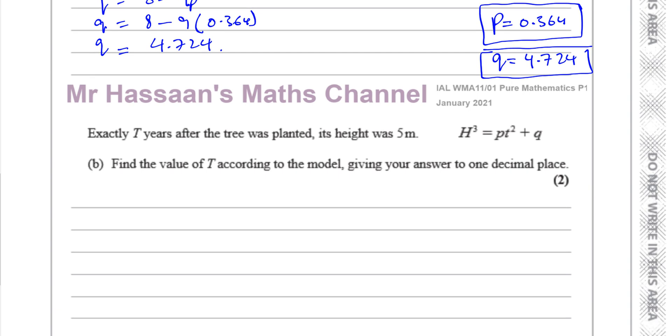Now for part b, it says exactly t years after the tree was planted, its height was 5 meters. Find the value of t according to the model, giving your answer to one decimal place. So first of all, let's just put in the values we know of the constants. So h cubed equals p, which is 0.364 t squared, plus q, which is 4.724. And we've got to find the value of t, which is the time when its height was 5 meters. So we know that when h is equal to 5, that little t is equal to big T. So we've replaced the h with 5. So you have 5 cubed equals 0.364 T squared plus 4.724.